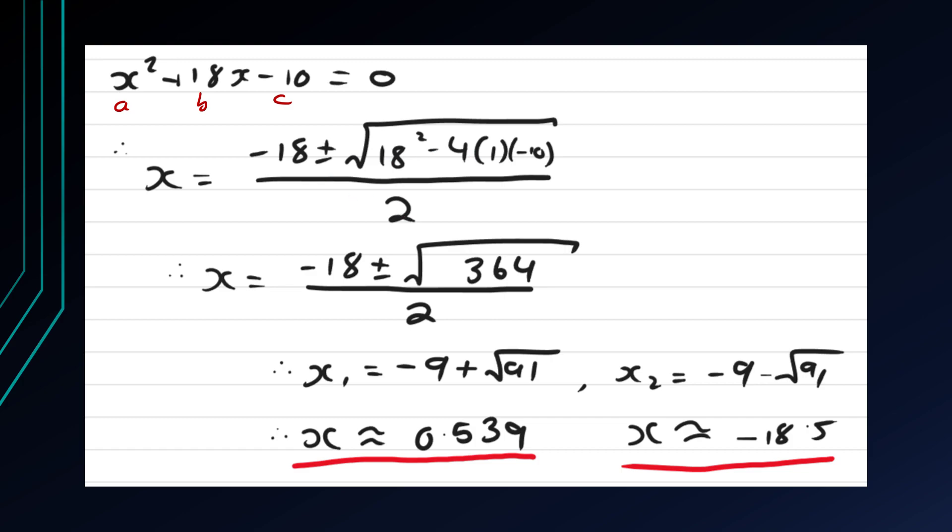That should be something that should be ringing in mathematicians' heads. Now, take a look at the significant figures at the bottom. Our answer is minus 9. So our actual x is minus 9 plus minus root 91, and x1 and x2 are shown here.